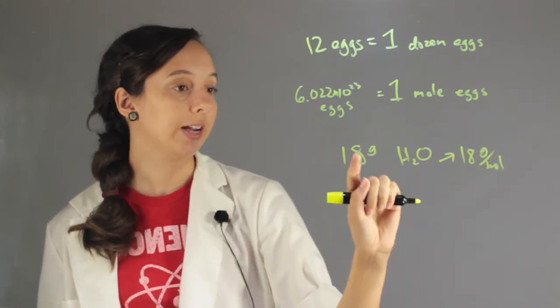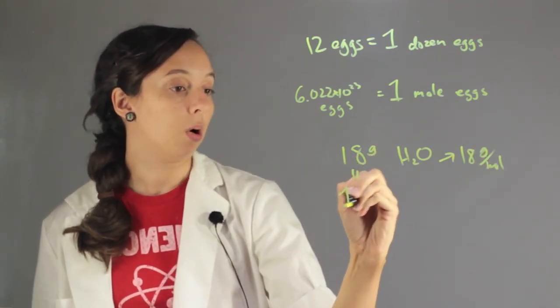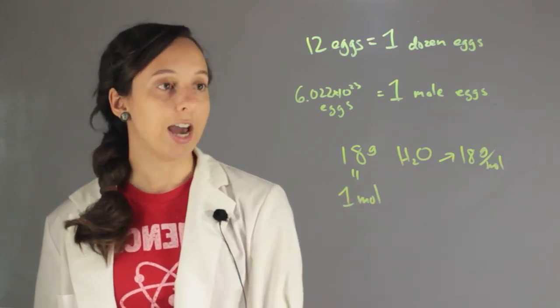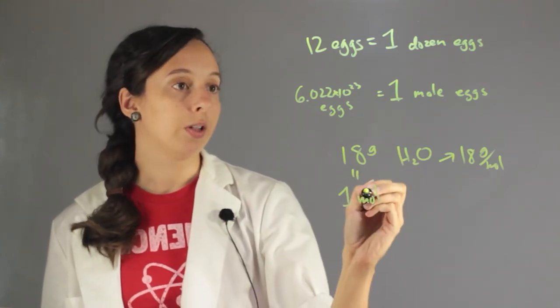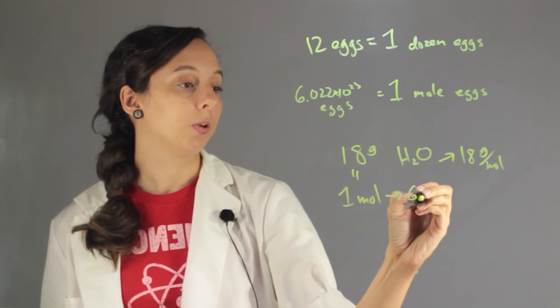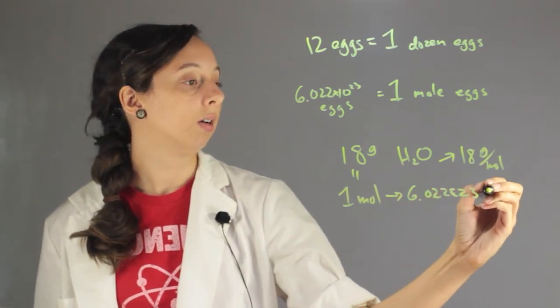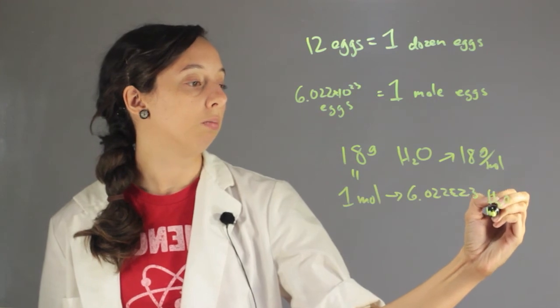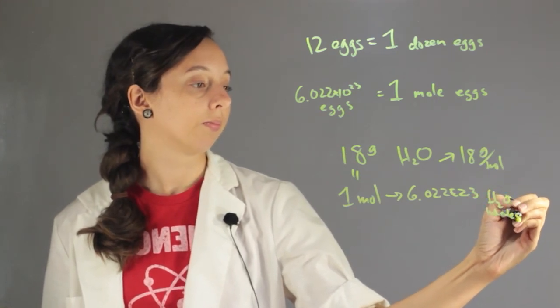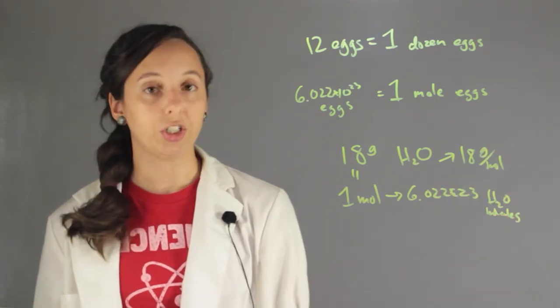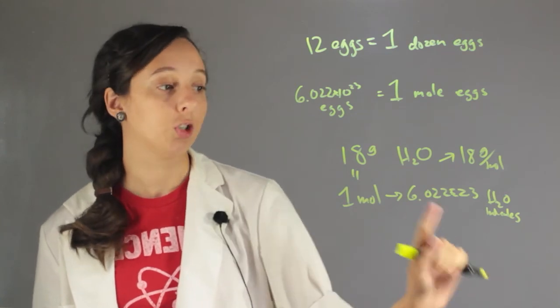Which means that I have 18 grams, I have one mole. And now I know since I have one mole that I'm going to have 6.022 E23 H2O molecules. And so this is much easier than constantly referring to it by the number.